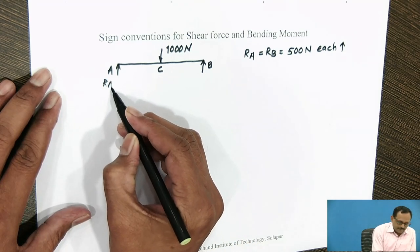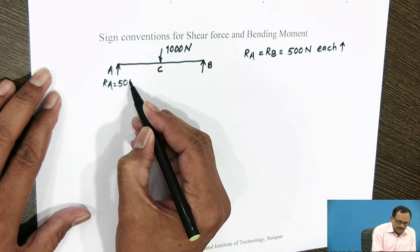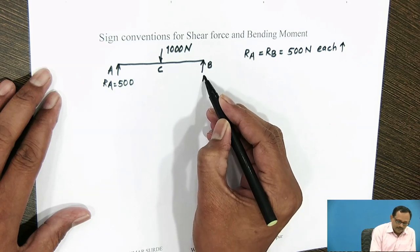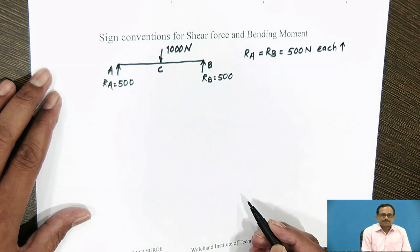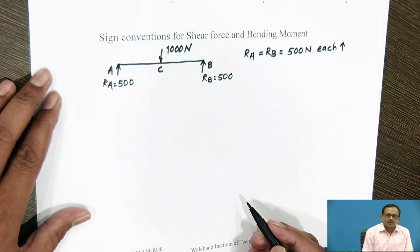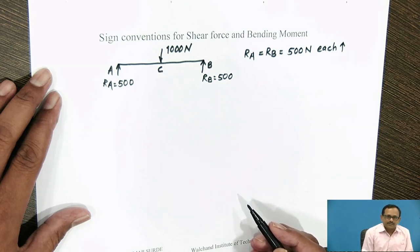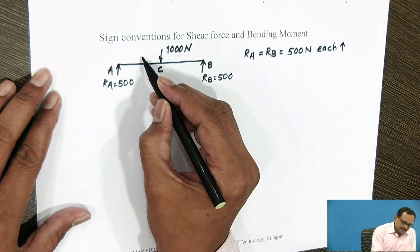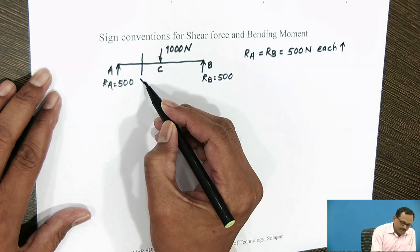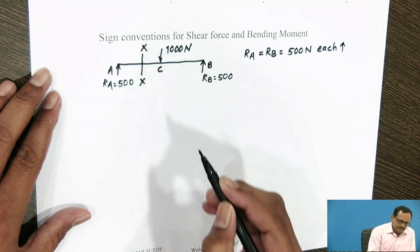R_A equals 500 N, R_B equals 500 N. Now, in order to calculate the Shear Force and to decide the sign conventions for Shear Force and Bending Moment, consider the section XX in between A and C.